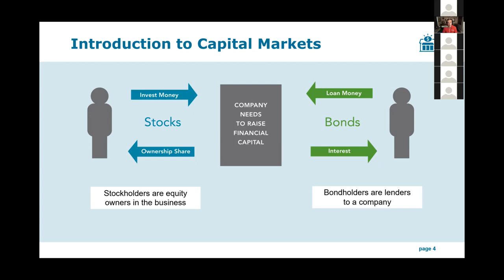To summarize these two broad asset categories: stocks are riskier but have more potential upside — stocks have higher expected returns to compensate for the fact that they are riskier investments. Bonds are safer and have correspondingly lower expected returns. To compel you to invest in a riskier investment, you must expect a higher return — it would be irrational to do otherwise.